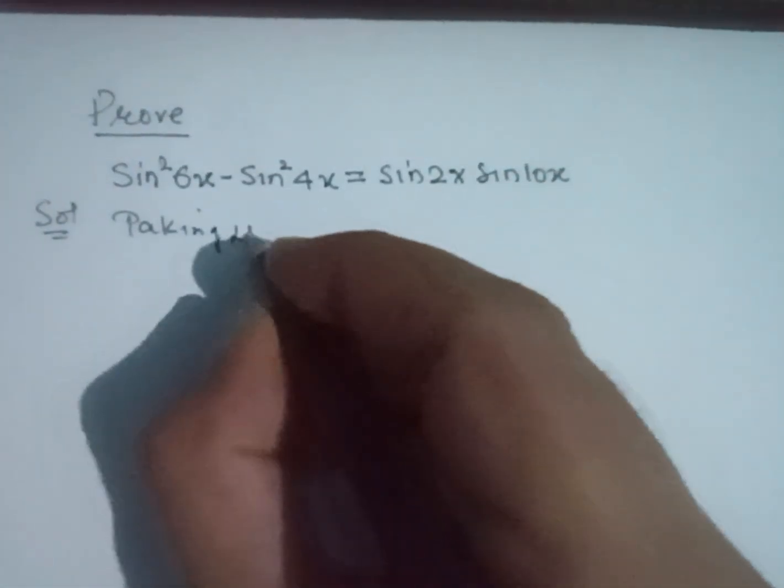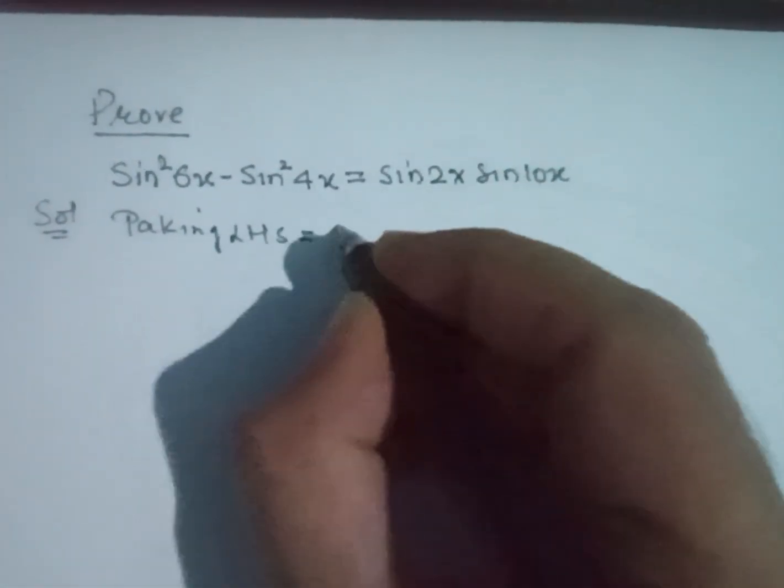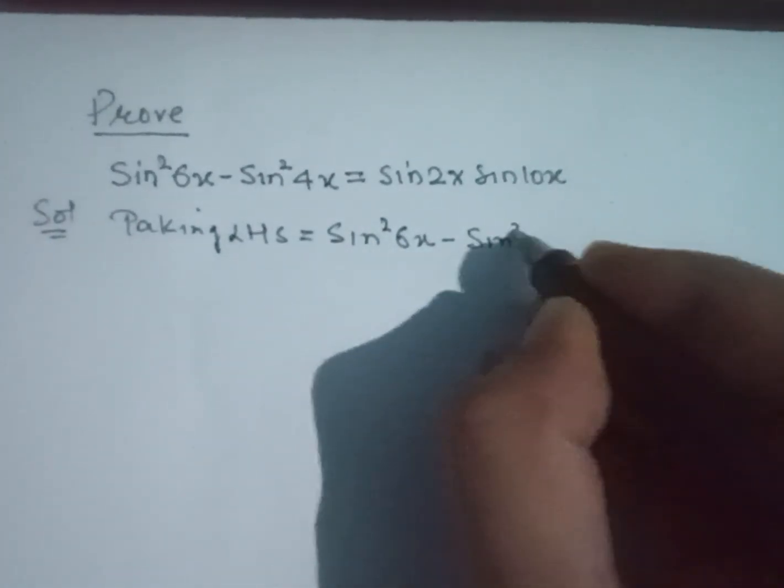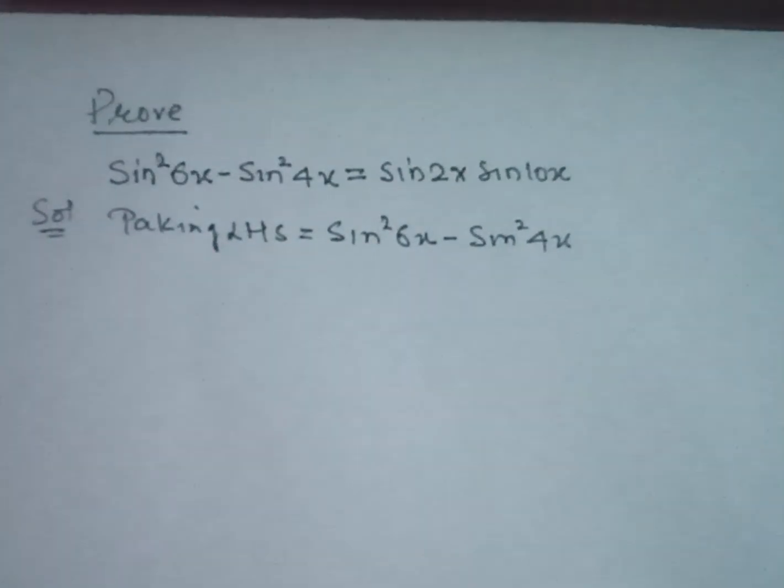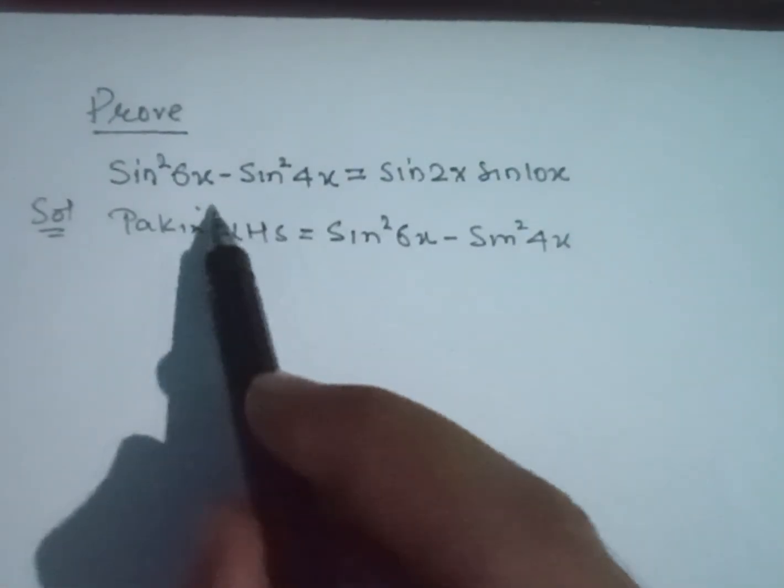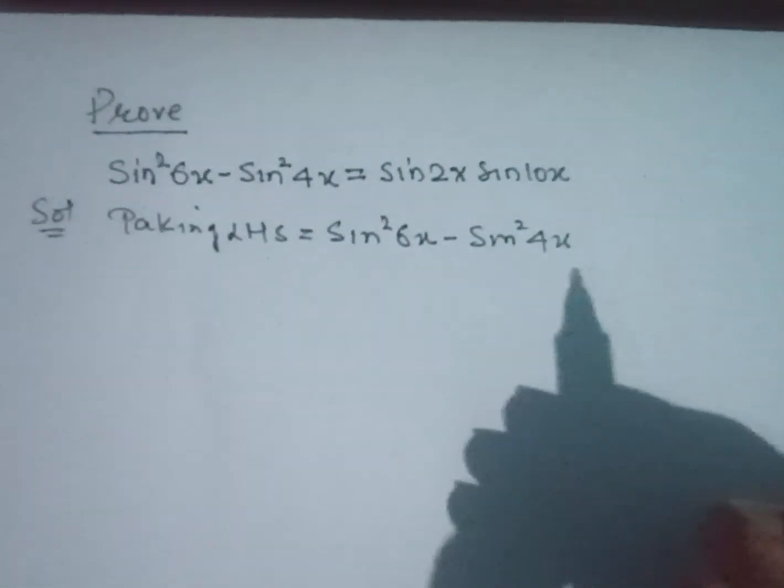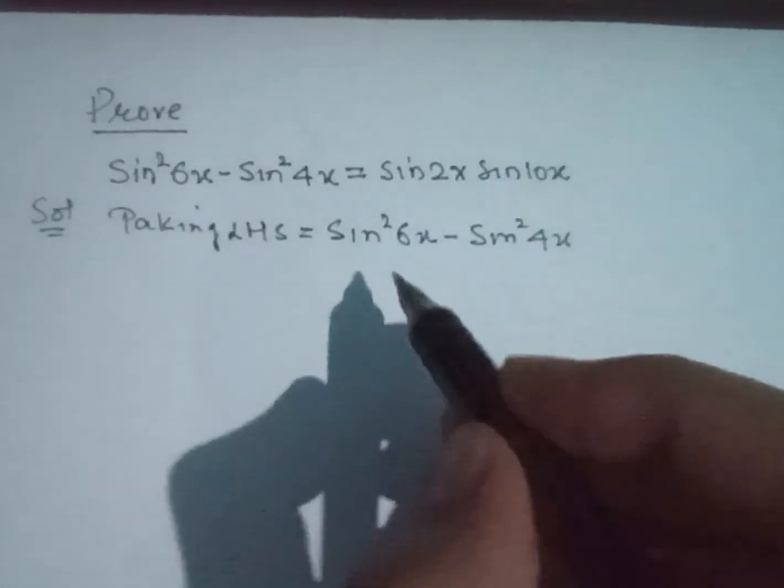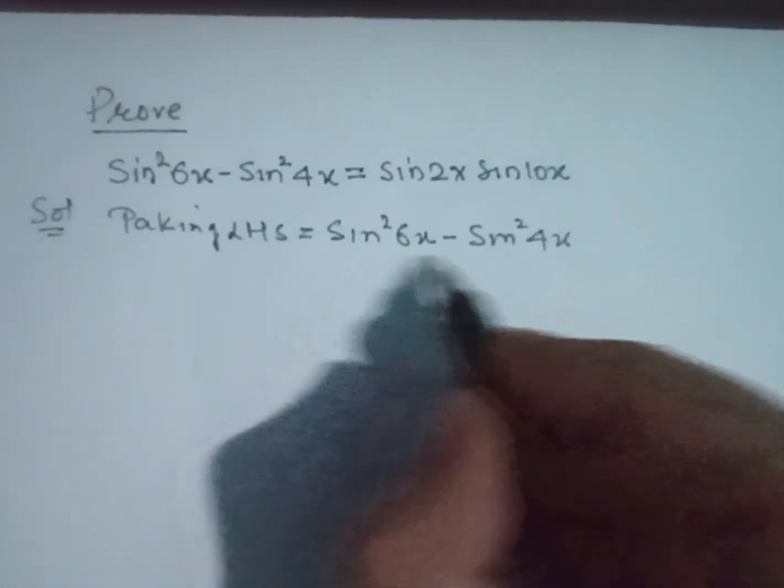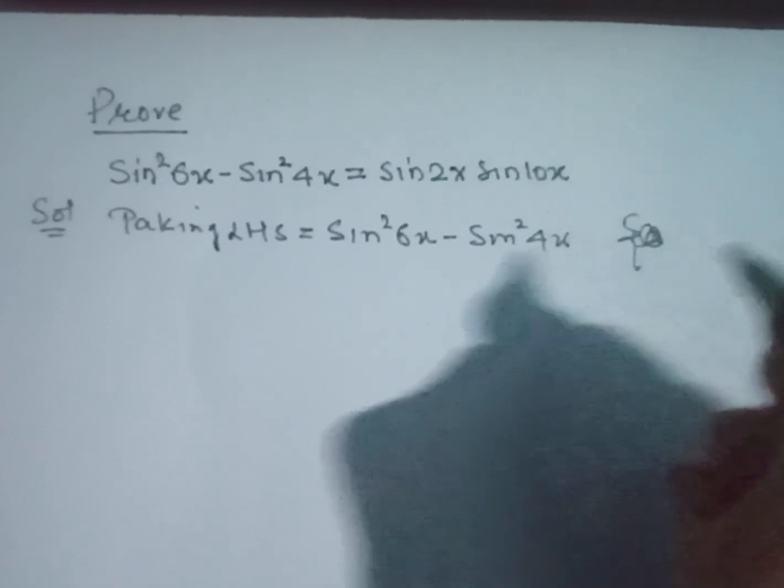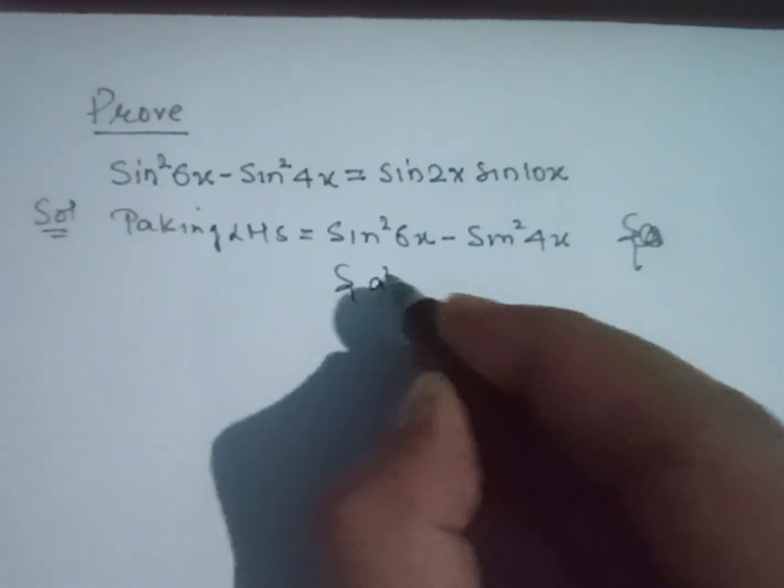Sin² 6x minus sin² 4x. Now we need to prove this side equal to the other side. So let's start. We will use an identity here. First of all, the identity a²